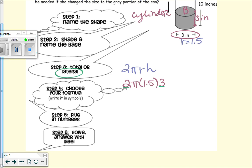All right. So this is our lateral, right? 2πRH. We substitute it in. Two times three is six. Six times one and a half is nine. And so that gives us what? Nine π.